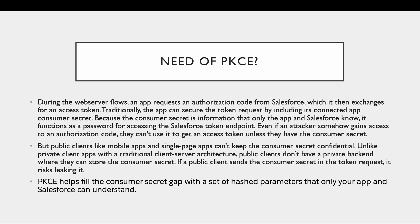During the web server flow, an app firstly requests an authorization code from Salesforce, and after it receives the authorization code it then makes a POST request for the access token. The app which is requesting the access token adds one more parameter - the consumer secret - because the consumer secret is information that only the app and Salesforce know. It acts like a password, so if an attacker gets access to the authorization code, they won't be able to fetch the access token unless they have the consumer secret.